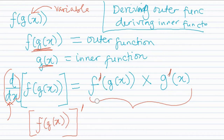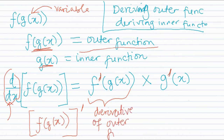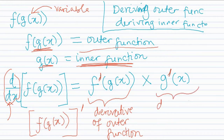The important thing to know: the derivative of the outer function times the derivative of the inner function is what chain rule involves. Here f(g(x)) is the outer function, so f′(g(x)) is the derivative of the outer function. And g(x) by itself is the inner function, so g′(x) is the derivative of the inner function.